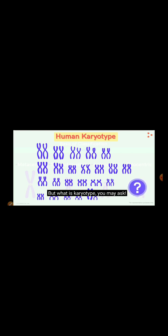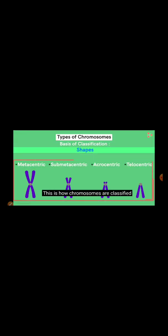But what is karyotype, you may ask? Well, it's one way of representing all the chromosomes found in a cell. This is how chromosomes are classified on the basis of their structures or shapes to be precise.